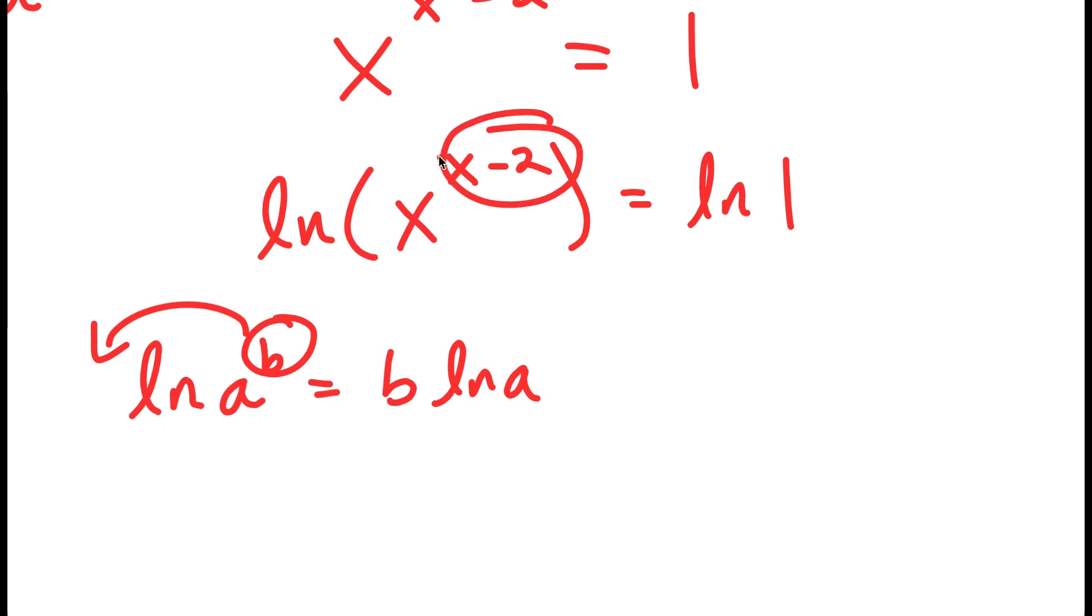So in this case, I can move x minus 2 to the front, so now I get x minus 2 times ln x is equal to ln 1.